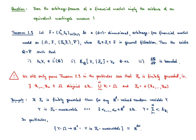In the last theorem we have seen that an equivalent martingale measure immediately implies that the underlying financial market model is free of arbitrage. So the question at hand is now: is it also true that whenever we have an arbitrage-free financial market model, this implies the existence of an equivalent martingale measure? The following theorem will give you a partial answer to that question.